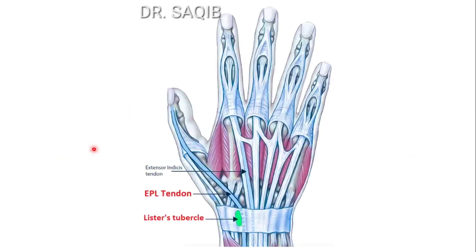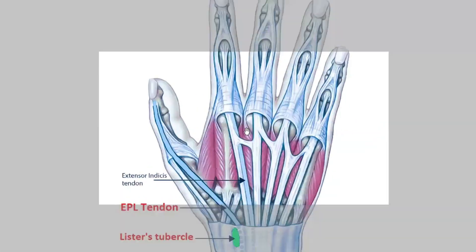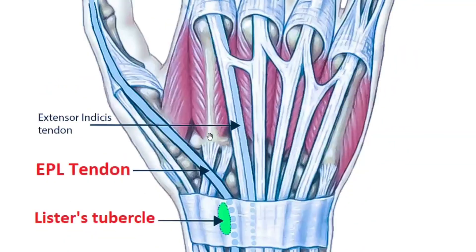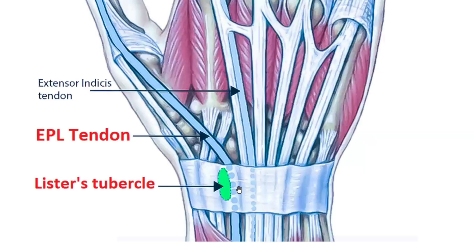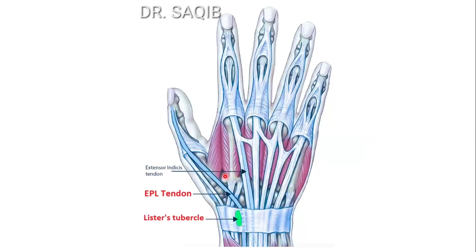Its function — it is of course an extensor. It extends the terminal phalanx of the thumb and draws the thumb back from the opposed position. It helps in extension and abduction of the wrist. You can see here this is the extensor pollicis longus tendon going like this, and this is the extensor indicis just to show you. Here in the enlarged picture you can see the extensor pollicis longus tendon, the extensor indicis, and the Lister's tubercle where the long tendon of the extensor pollicis longus gets hooked around.